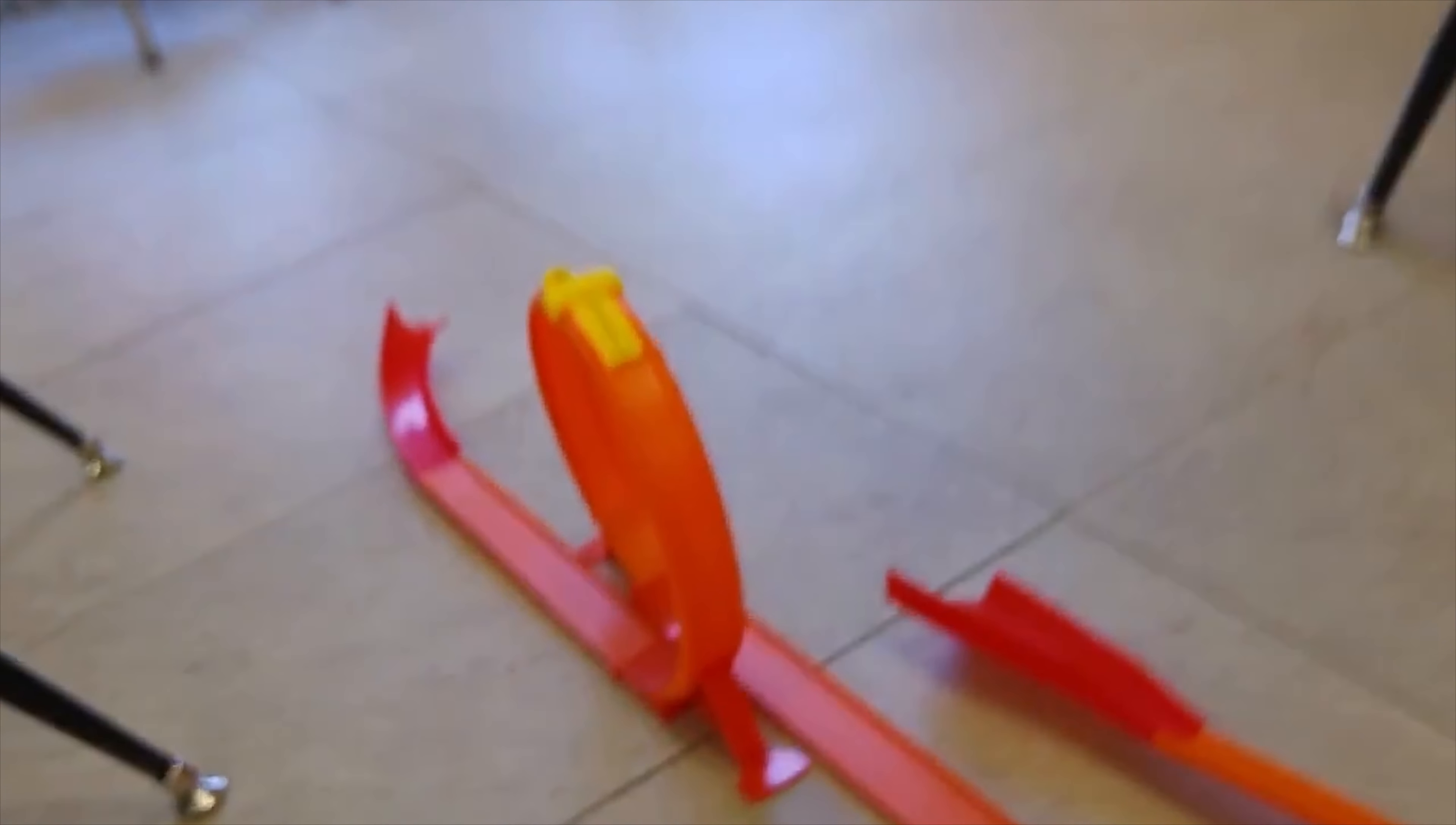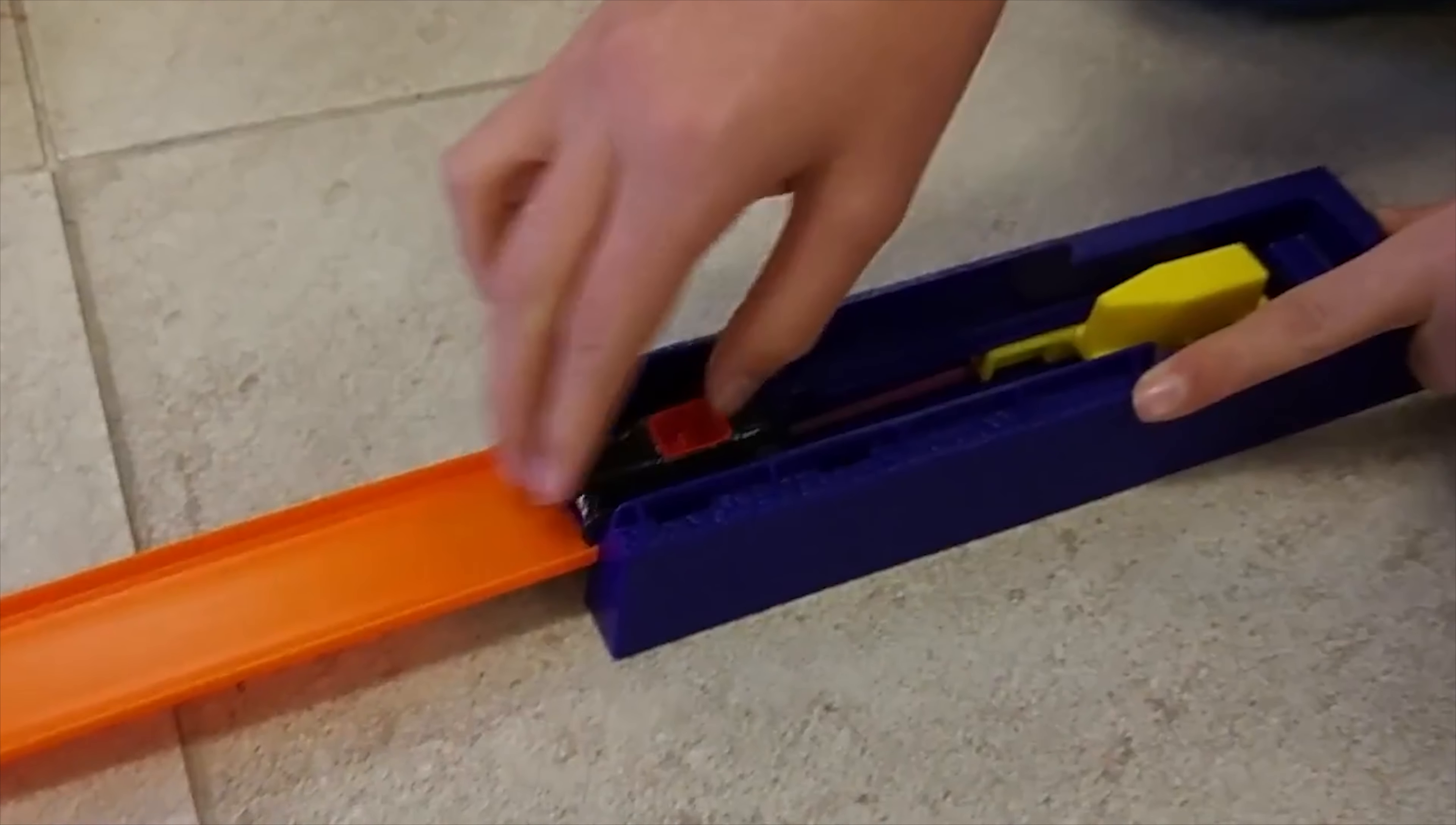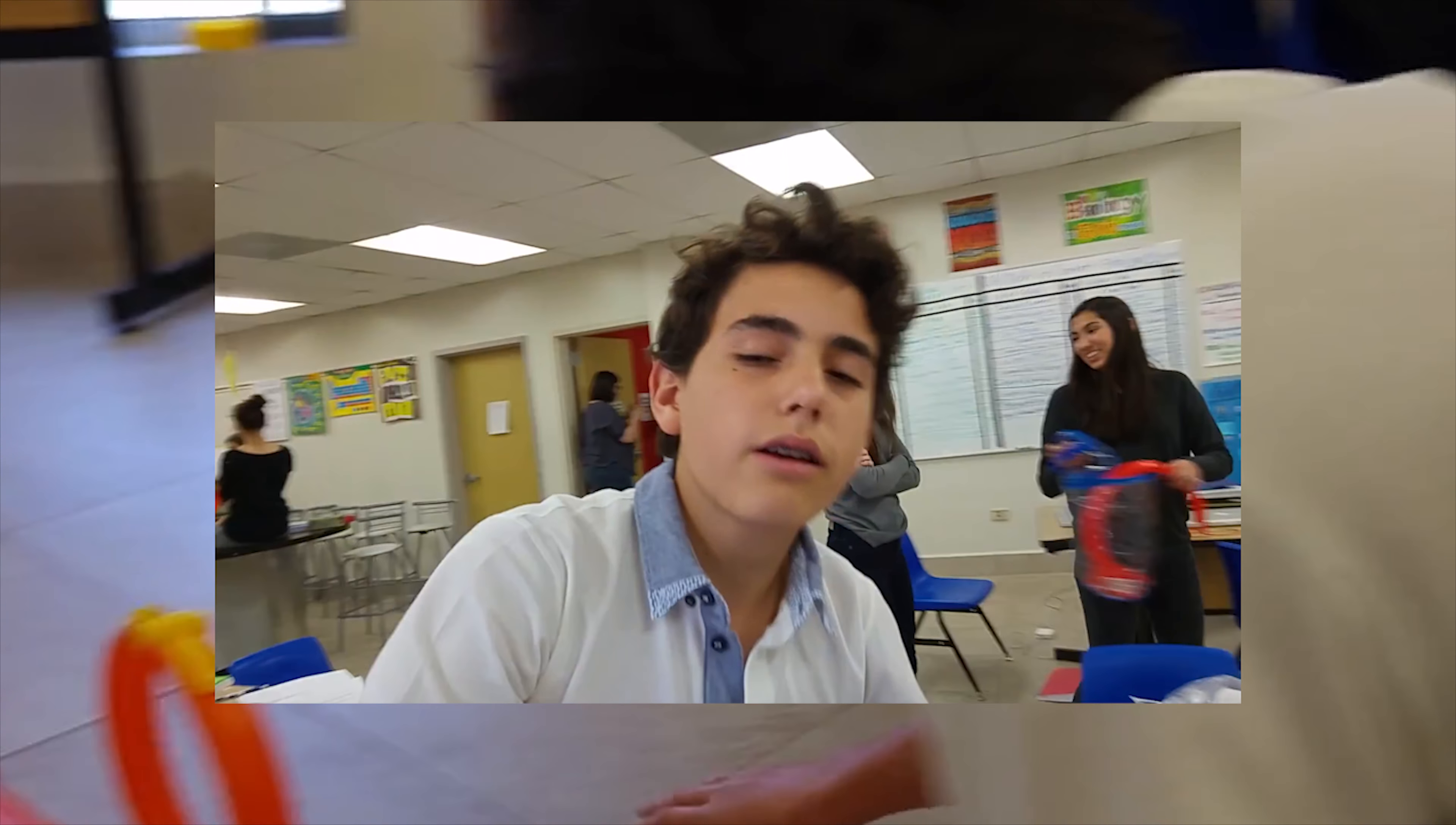On their second trial, Team Lightning decided to change it up a bit and included a launcher on their magnificent track. As you can see, the launcher gets a boost at the beginning of the trial and stores the kinetic energy inside the car, converting it into potential energy. And as you can see, there it goes. And that was not a success.